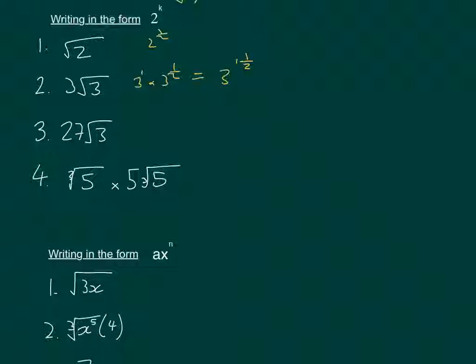Here again, we've got 27 times 3 to the power of a half, which is going to be 3 to the power of 3 and a half.